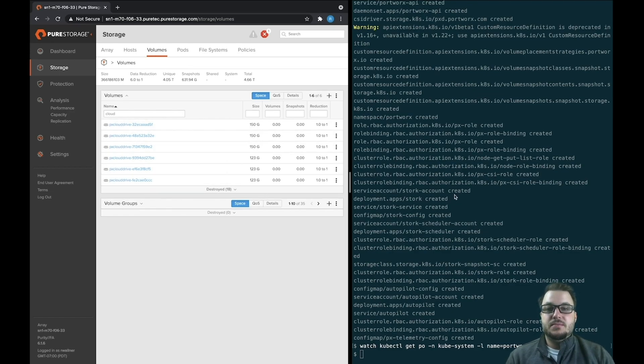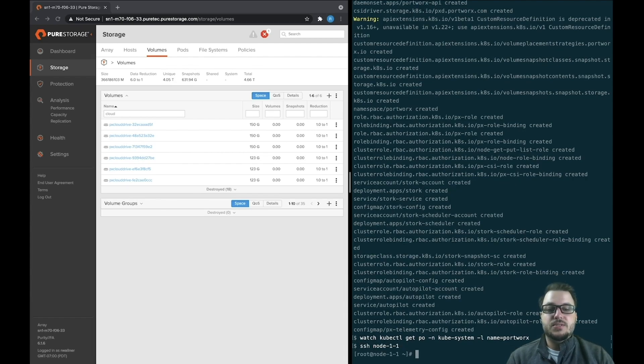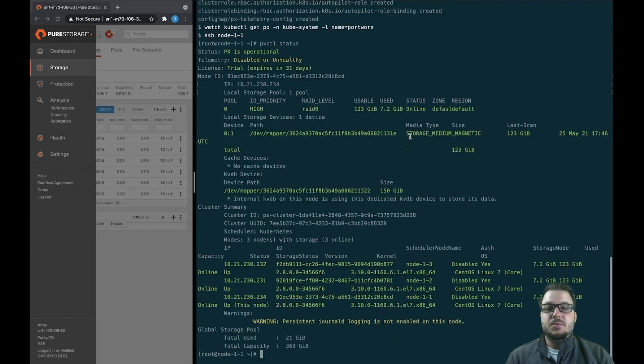We're now ready to go. We can check our Portworx cluster by going into one of our nodes and issuing the pixie cuddle status command. Here we can see Portworx is operational and in fact using our flash array LUNs underneath.